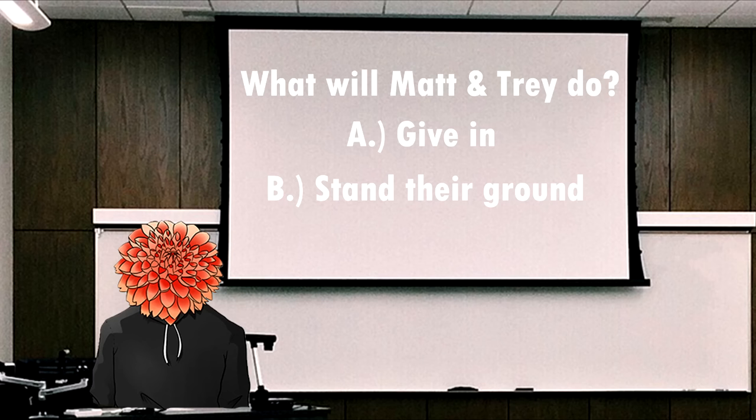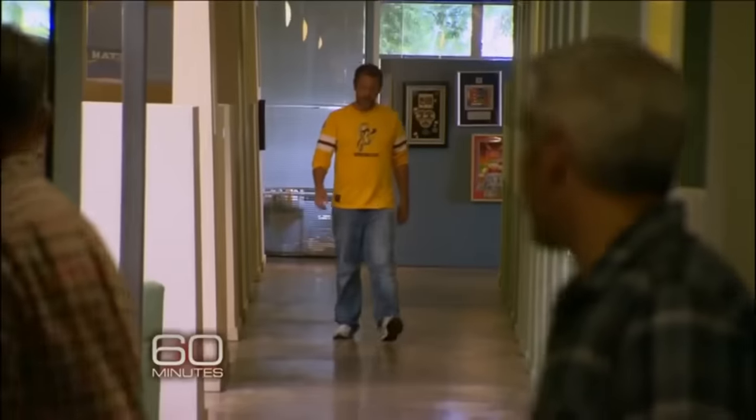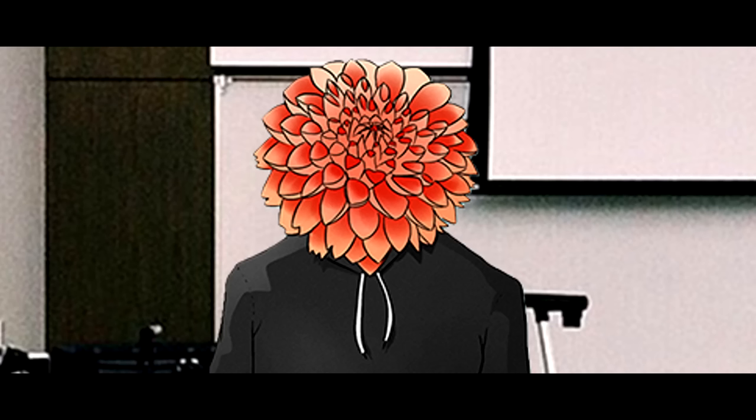Well, in true South Park fashion, Matt and Trey did not care. They still planned on creating the episode exactly as initially planned, including Muhammad. In their minds, to give in to these threats would be the ultimate hypocrisy since the entire purpose of these episodes was to stand against the use of violence to censor those who think differently. They were meant to be statements about the importance of free speech and how giving into terrorism even once will encourage others to do the same. The only problem is, Matt and Trey don't actually control what airs — that's Comedy Central's job, and they had different plans in mind.